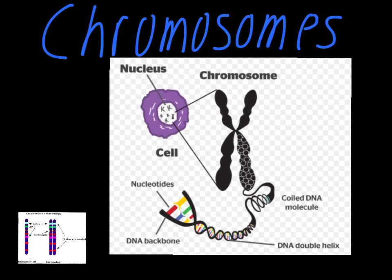If we take a look at this first picture, one of the things it's showing you on the left-hand side is a cell. We have the membrane around the outside and then the nucleus in the middle. Inside of the nucleus are these little X-like structures — those structures are the chromosomes.